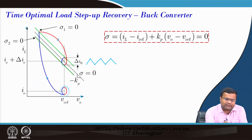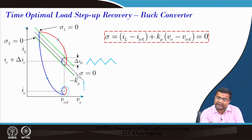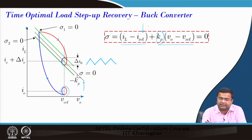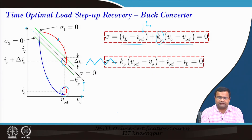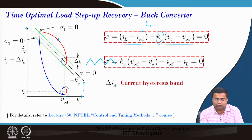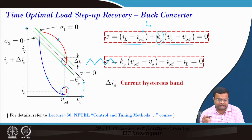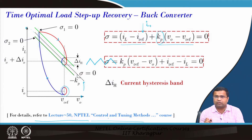The equation of the dotted switching surface sigma = 0 is: IL minus Iref plus Kp times (V0 minus Vref), where Kp is the proportional gain and Iref in the buck converter is the average inductor current, which equals the load current. Incorporating the hysteresis band gives sigma1 and sigma2 equations with the same slope but with a separate hysteresis term. This is discussed in detail in lecture 50 of our earlier NPTEL course on control and tuning methods.